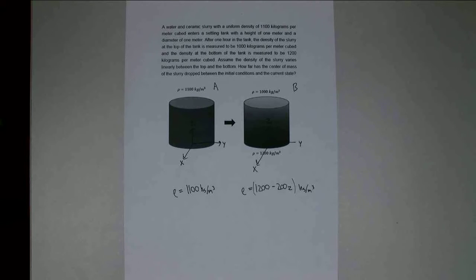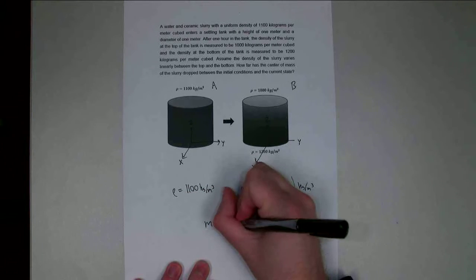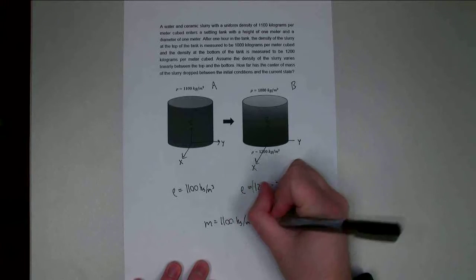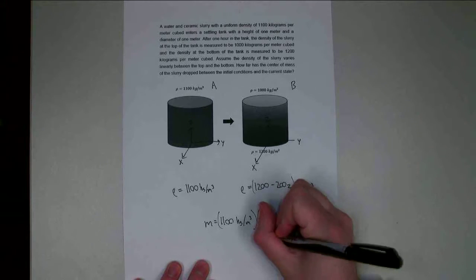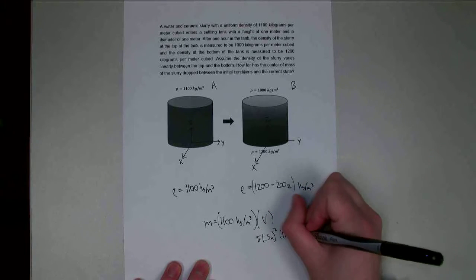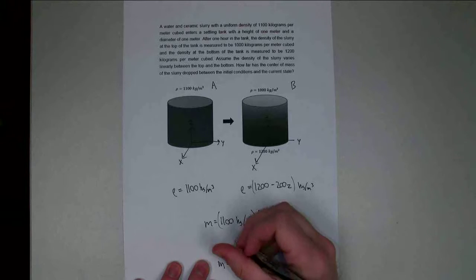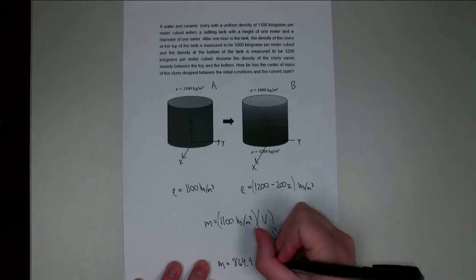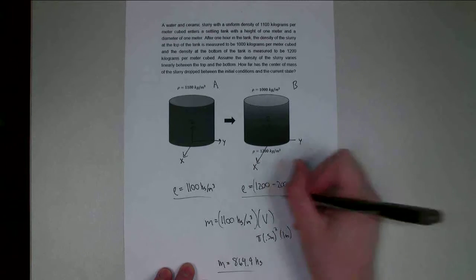Next, I want to calculate the overall mass of the tank, which is the same in both situations since nothing is entering or leaving — it's just redistributing. Using the initial scenario: mass = density × volume = 1,100 × π r² × h = 1,100 × π × (0.5)² × 1, giving an overall mass of 864.9 kg.